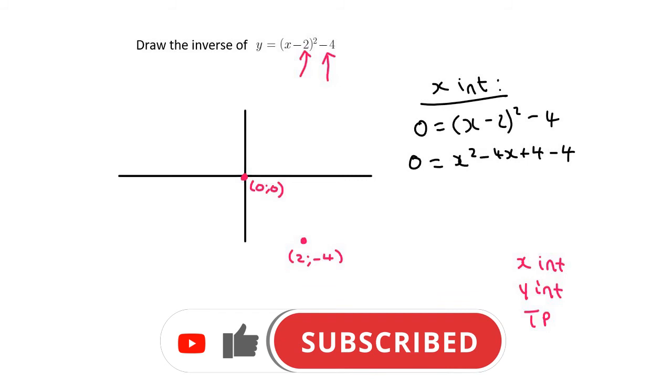The last thing we need is x-intercepts. To do that, we make y equal to 0 and then multiply the bracket out. Remember that (x - 2)² means there are two brackets, so just be careful there.